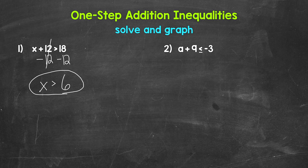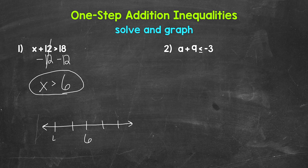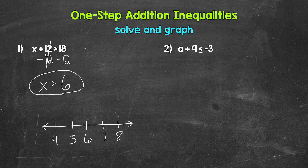Now we can graph x is greater than 6, showing all of the solutions. We start with a number line and put 6 in the middle, with a couple of numbers on both sides: 4, 5, 6, 7, 8. When graphing inequalities, a filled circle shows we are including that number, and an open circle shows we are not. Here, x is greater than 6 — we are not including 6, since 6 is not greater than 6, it's equal to 6. So we start at 6 with an open circle.